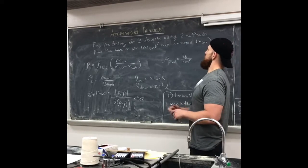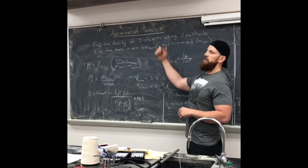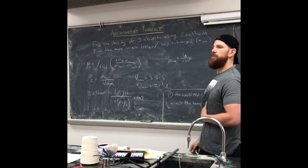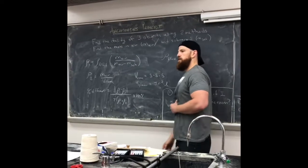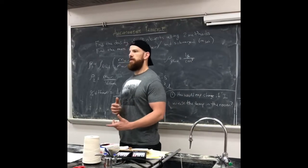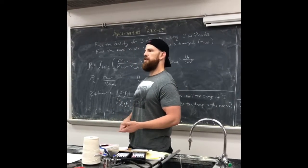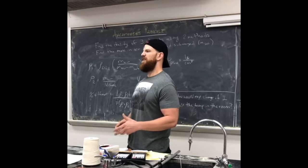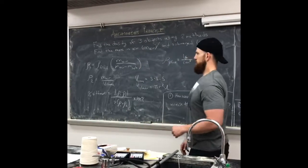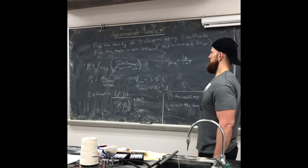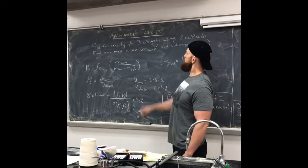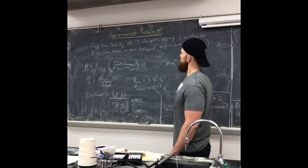We're going to explore two different ways to find the density of three different objects. Each of you have three different objects on your table, which should be a composition of maybe two cylinders and a cube or two cubes and a cylinder, with varying compositions because it works best if they're varying densities. Getting the same answer over again is boring. So we're going to find the density of three different objects.